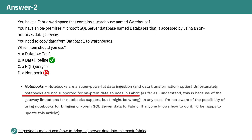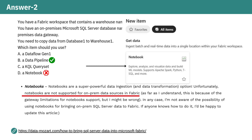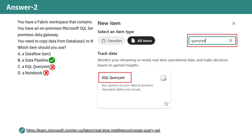Notebooks can't use an on-premises data gateway, so they're not ideal for directly moving data from an on-prem SQL Server database. They're great for data analysis, but not bulk data movement. KQL Query Sets are for running queries and viewing data from sources like EventHouse and KQL Databases. They don't move data from SQL Server to Fabric warehouses.